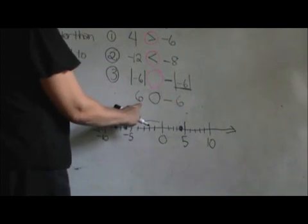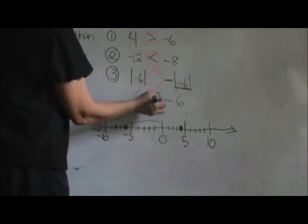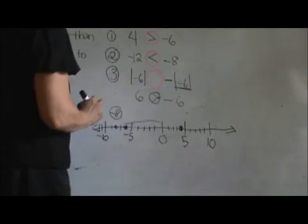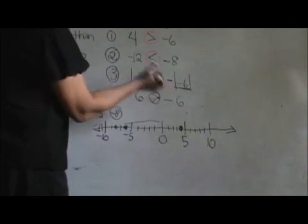Positives are always larger than negatives. So we are going to point or use the smaller symbol towards the smaller number. So that is 6 is greater than negative 6.